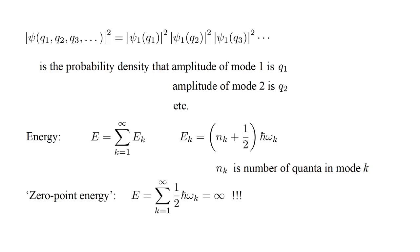But we already have a problem. Note that even if none of the modes contain energy quanta, they each still have non-zero energy, one-half h-bar omega k. And there are an infinite number of modes. So the lowest energy of the system, the zero-point energy, is infinite.